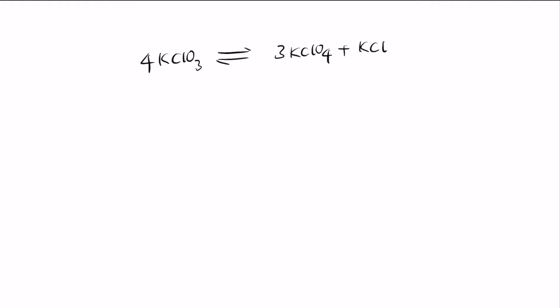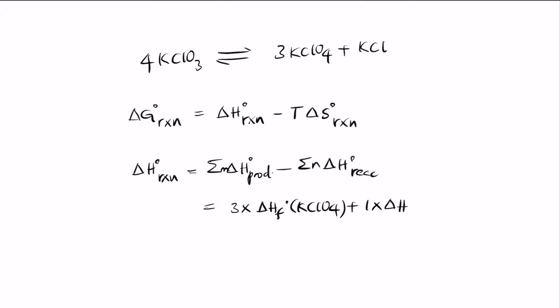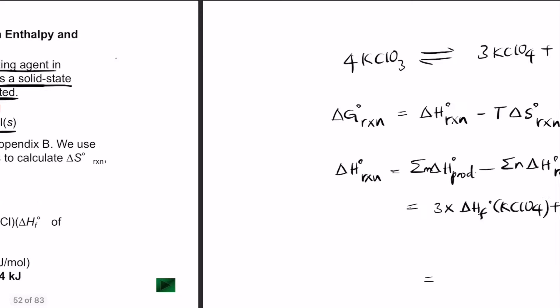For this reaction, delta G can be written as delta H of the reaction minus T times delta S of the reaction. Delta H of the reaction becomes 3 times delta Hf of KClO4 plus 1 times delta Hf of KCl minus 4 times delta Hf of KClO3. Using the table, this gives a final value of minus 144 kJ.